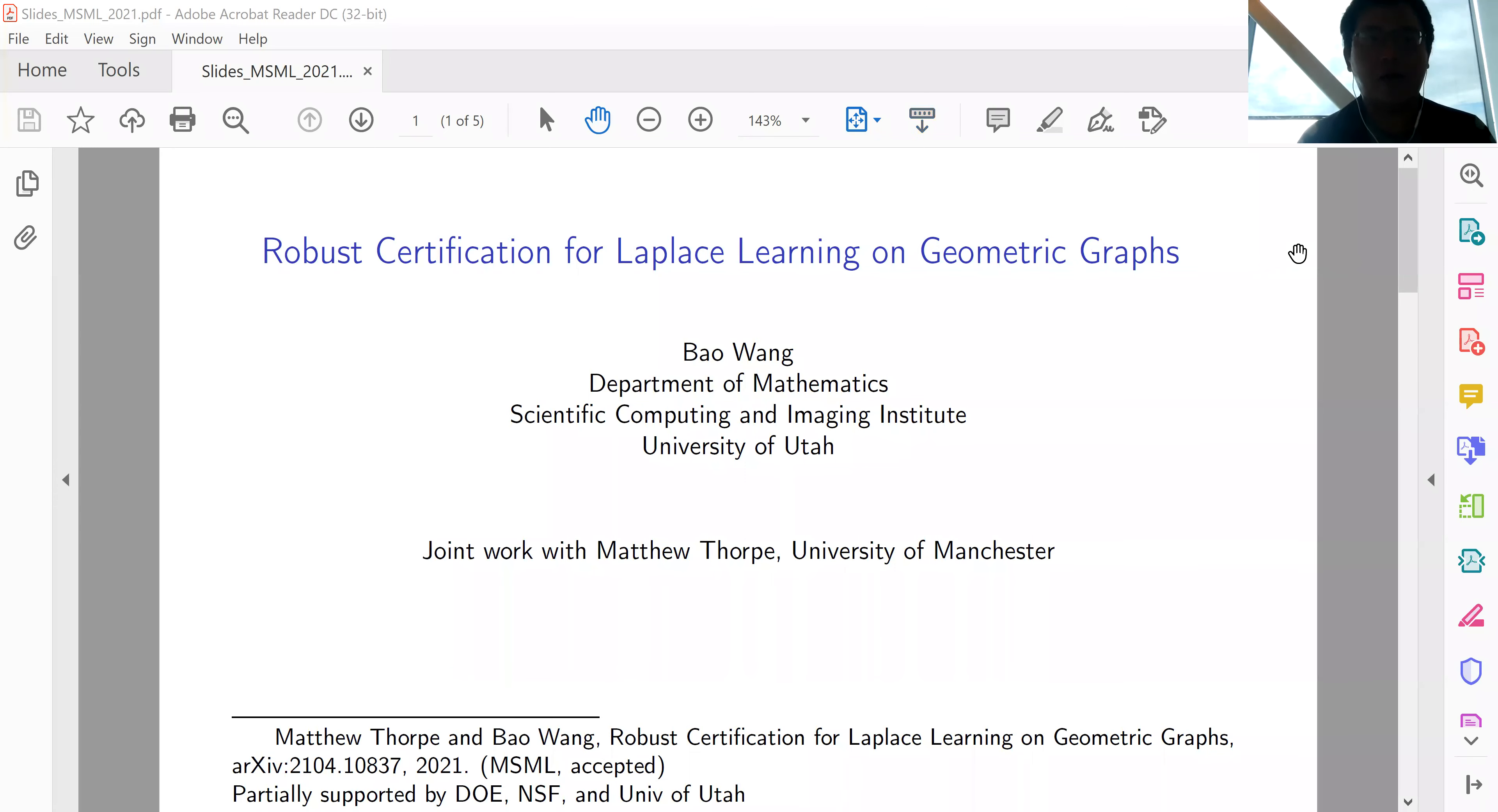It's a pleasure to present our accepted paper, Robust Certification for Laplace Learning on Geometric Graphs. This is joint work with Matthew Thorpe from the University of Manchester. Our paper is available on arXiv. This work is partially supported by the Department of Energy, the National Science Foundation, and the University of Utah.